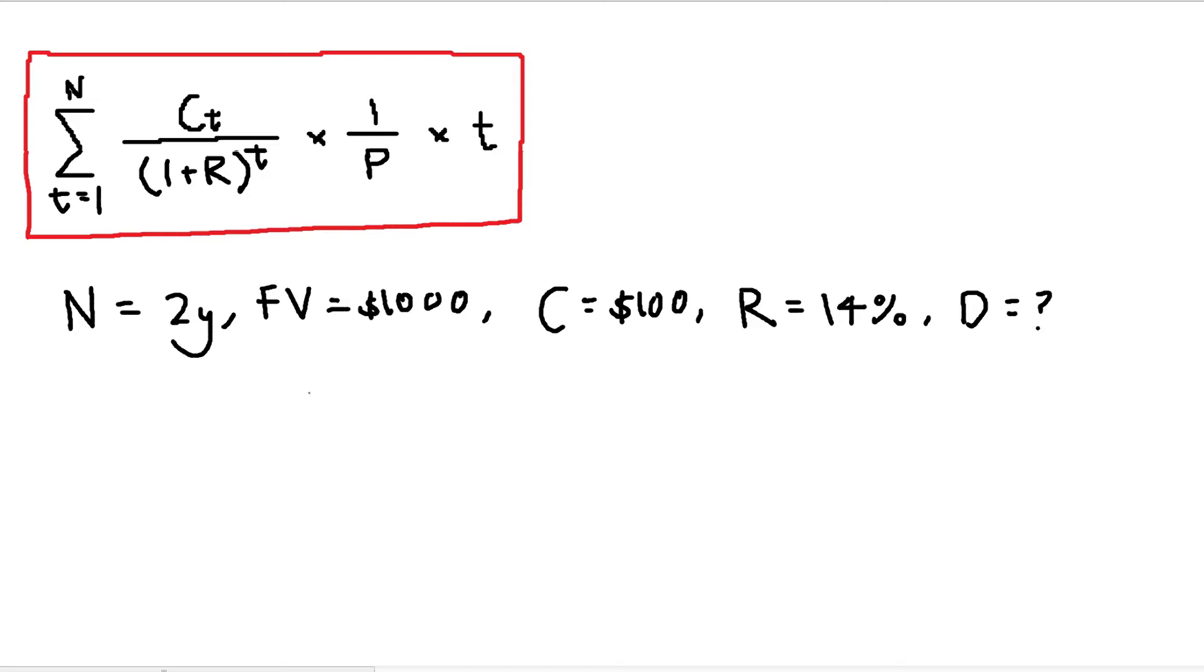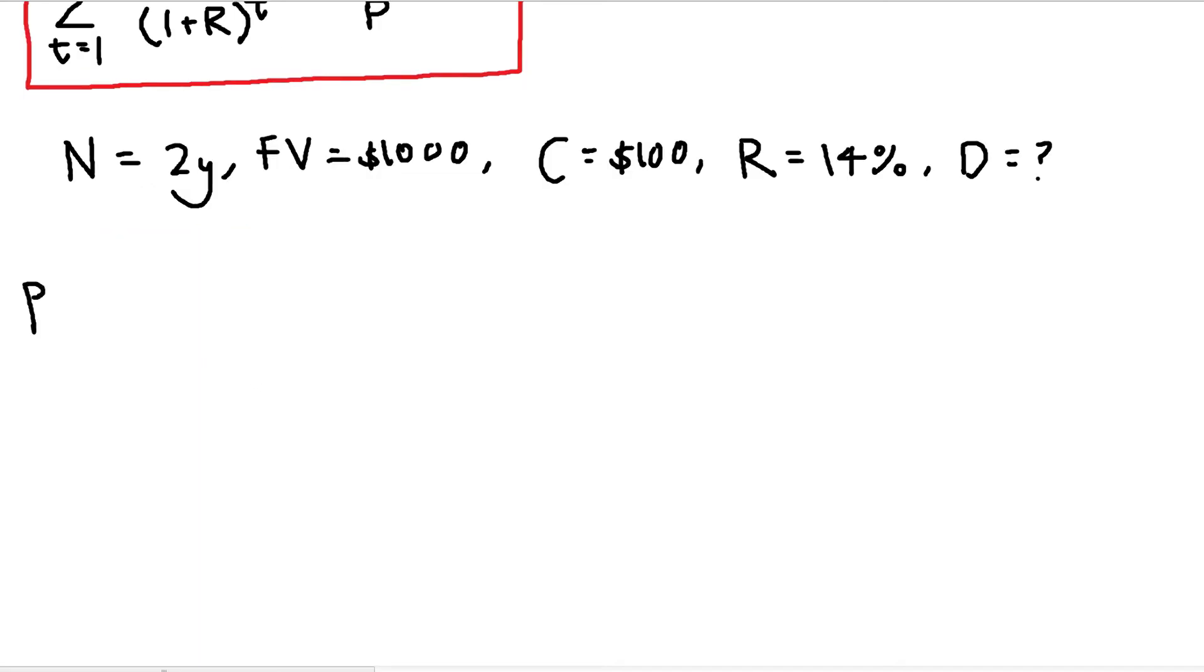So before we do any calculations regarding duration, the first step we need to do is actually find the bond price. So P equals coupon payment one, which is $100, over 1 plus yield to the power of one, plus the second coupon payment, which is $100. But since this is the last payment, we add the face value plus $1000, over 1 plus 14% to the power of two, and this should give you $934.13.